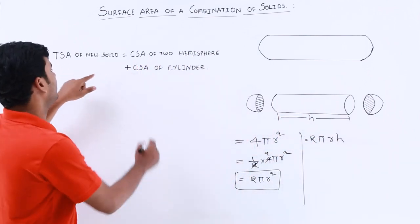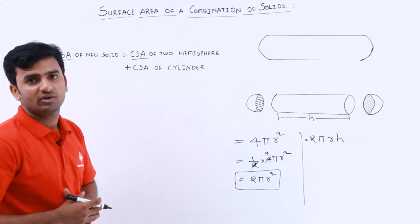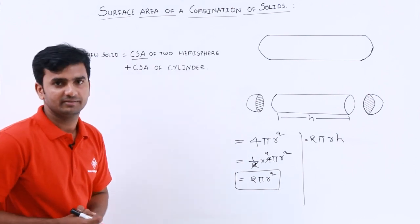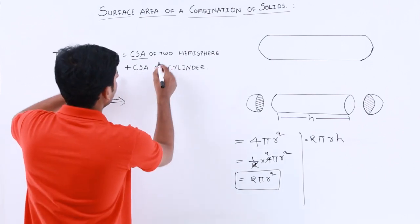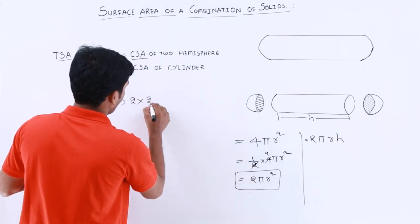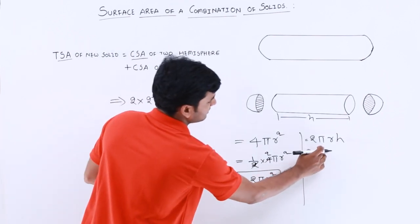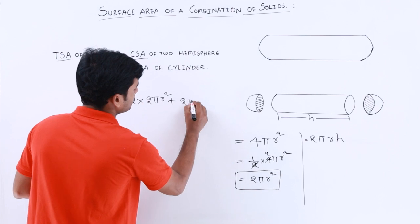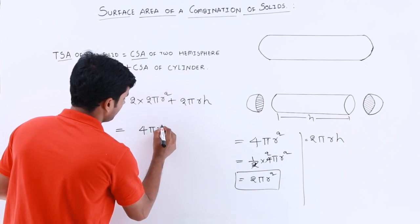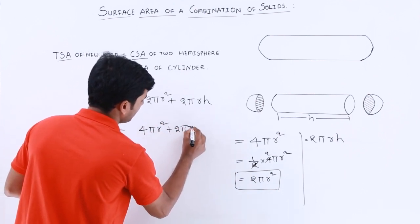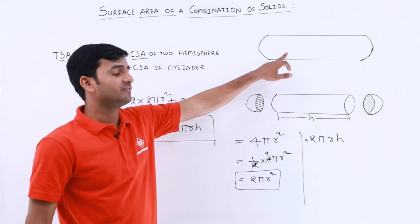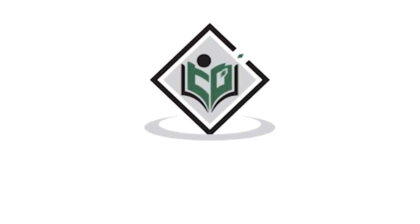I have written CSA and TSA in short form — CSA means curved surface area and TSA means total surface area. To calculate: we have 2 hemispheres, so 2 into 2πr², plus the curved surface area of the cylinder, 2πrh. Overall it becomes 4πr² + 2πrh. So this is the formula for the curved surface area of this combined solid. Tutorialspoint.com — Simply Easy Learning.